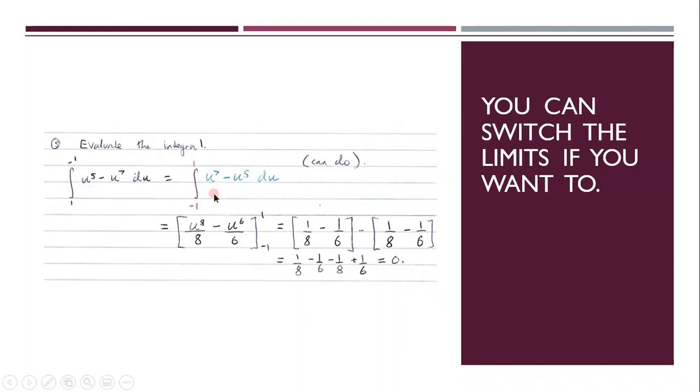And in this case, you can switch the limits if you want to. So if you remember, if you take the negative of an integral, it will become a positive integral if you switch the limits around. So as you can see, the negative is down here and the 1 is up there. And this is now positive u7 minus u to the 5. You don't have to, but that's what I would prefer to do. So then you evaluate it, and you find out that the area under this curve for the specified interval is just 0.